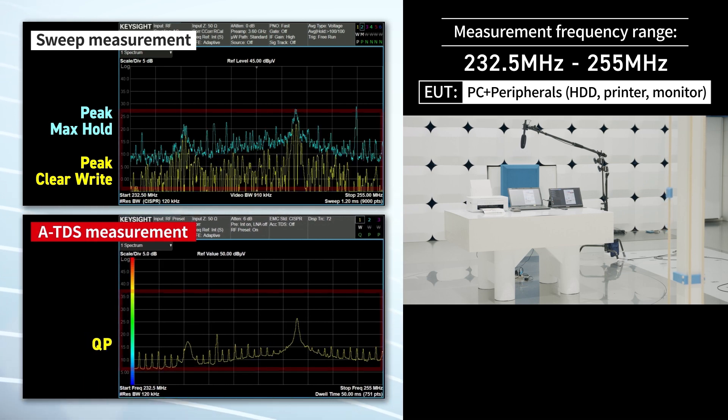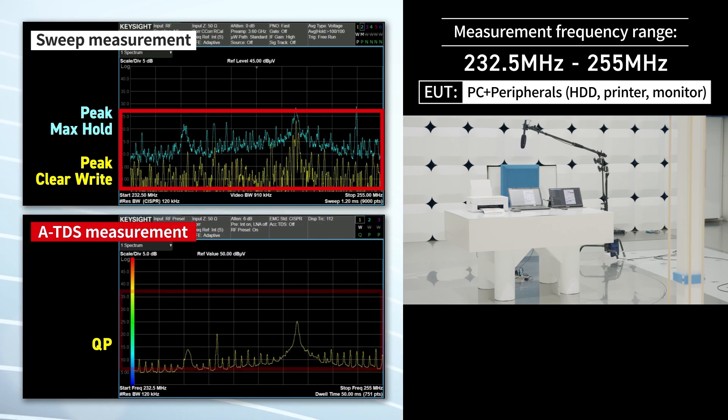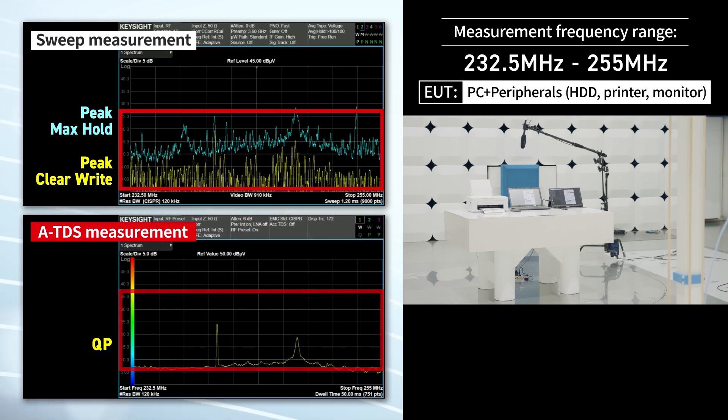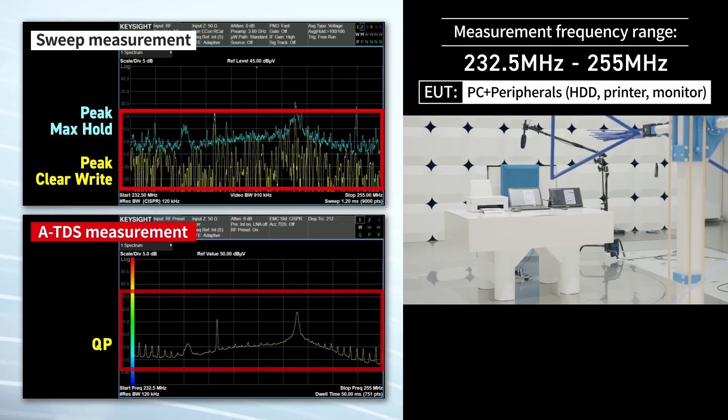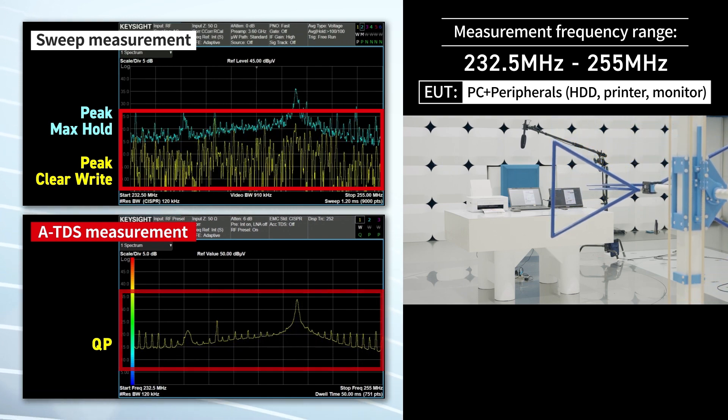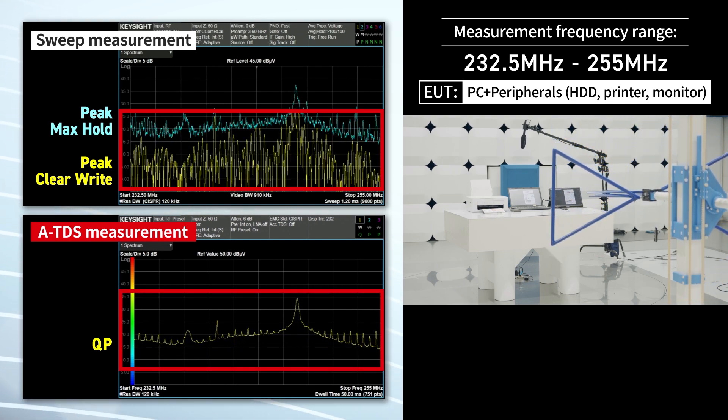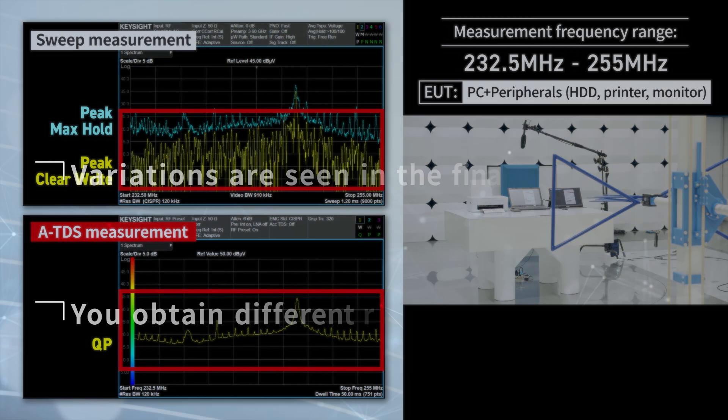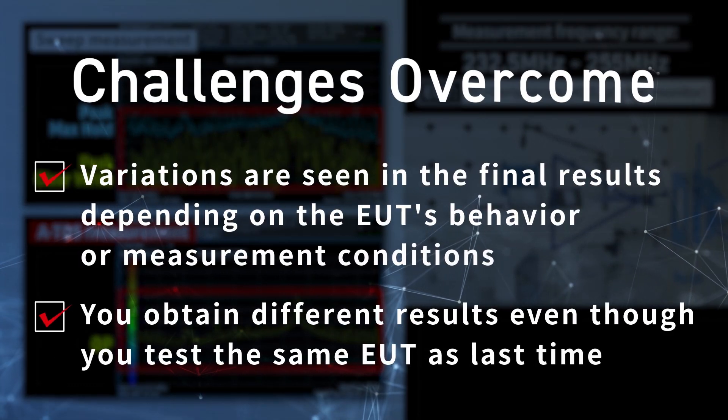With the ATDS feature, you can continuously monitor the noise behavior in a wide bandwidth in the QP mode in the compliance measurement. This is not possible with the conventional EMI receiver mode. This allows you to obtain accurate and repeatable results.